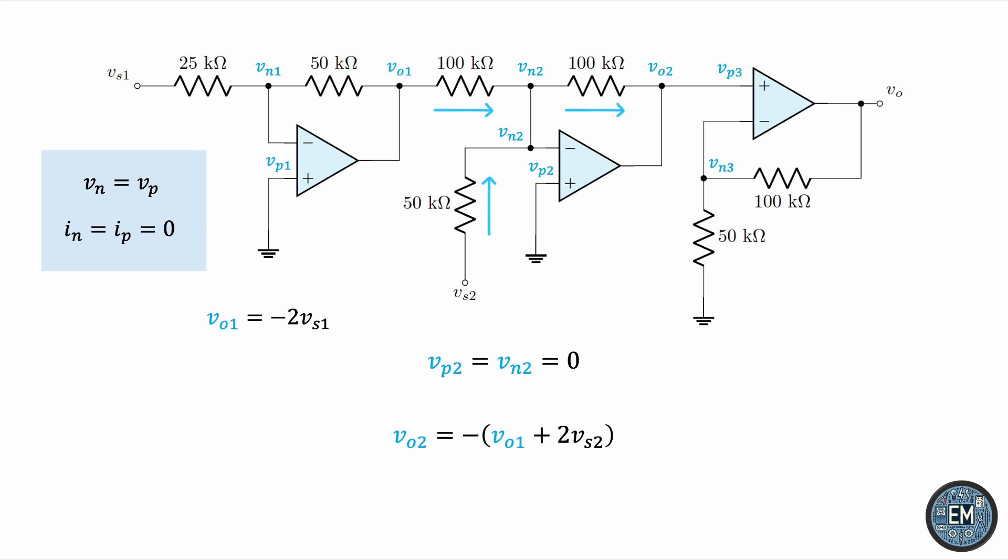But we already know what V01 is from the first stage of the analysis. So, we can substitute negative 2Vs1, and this gives us V02 equals 2Vs1 minus 2Vs2. And this completes the second stage of the analysis.